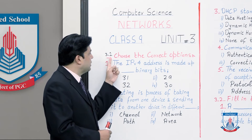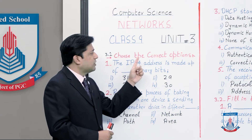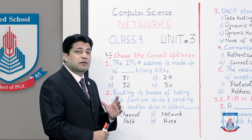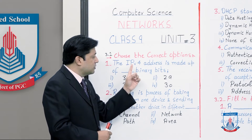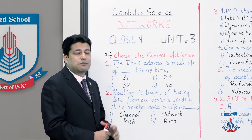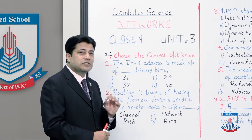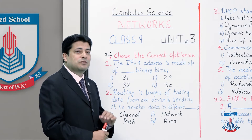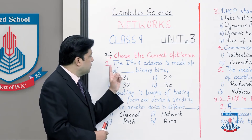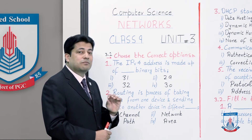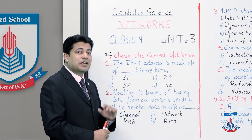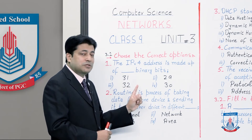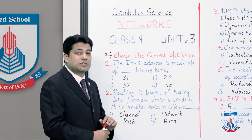The first exercise is 3.1 — choose the correct options. As in the previous two units, a statement is given and against it different options are available. You have to choose the best option. The first tip is to read the statement carefully and see what area it is taken from, then identify all the options and understand which ones are not applicable.